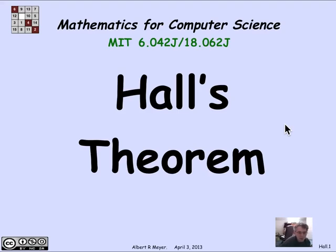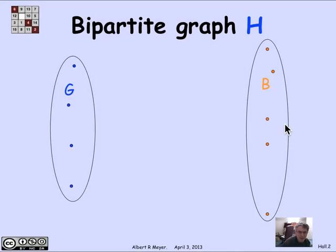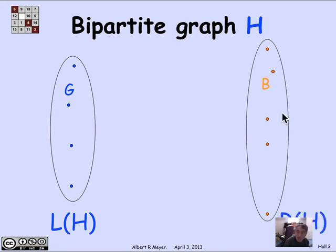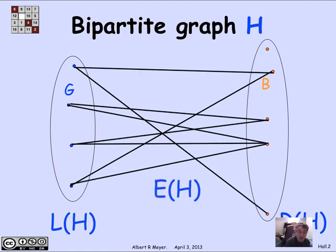Let's state Hall's theorem in a way that doesn't mention boys and girls, but let's remember the girl-boy setup to start. The general setup is a bipartite graph H. A bipartite graph has two sets of vertices: a set L of H called the left vertices, and a set R of H called the right vertices. The vertices of H altogether are L(H) union R(H). Both are non-empty and don't overlap. The edges of H only go between L(H) and R(H). That is the definition of a bipartite graph.